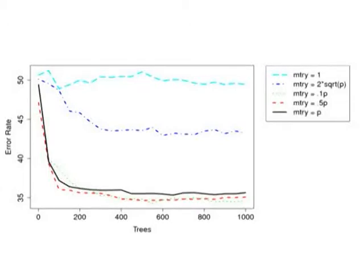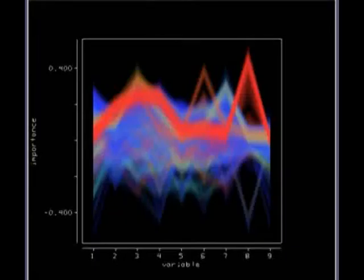Finally, by taking the most voted class, let's call it J, every time case N was out-of-bag, we can calculate the error estimate by taking the proportion of times that J was not equal to the true class of N averaged over all cases.